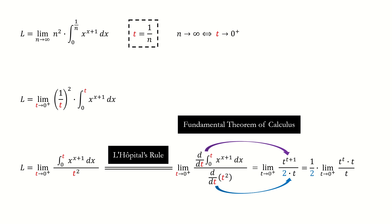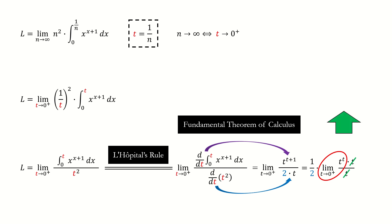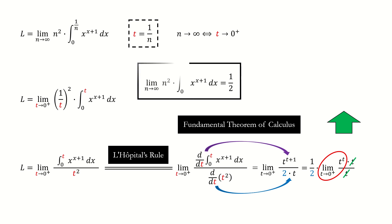Next, we take one half out of the limit, and write the numerator in this way. t cancels out. For this limit, we have derived in the last video — it equals 1. You can click that video to watch the details. So we got the final answer.